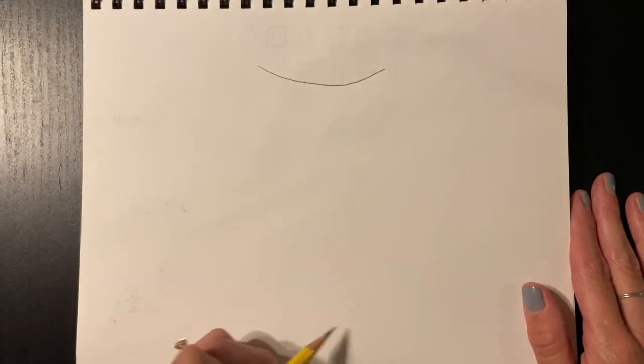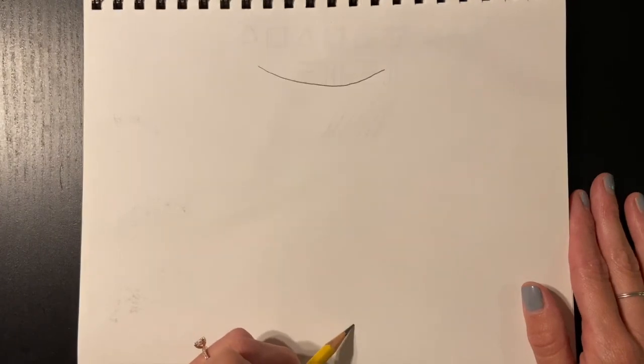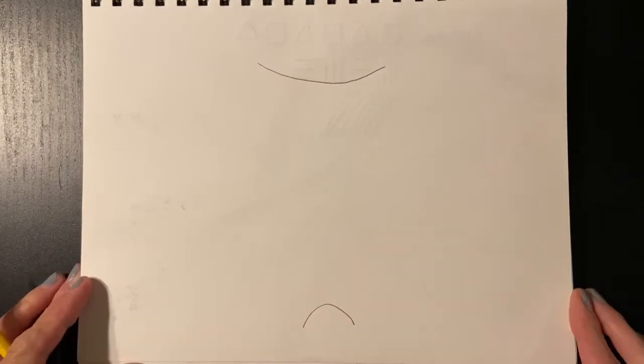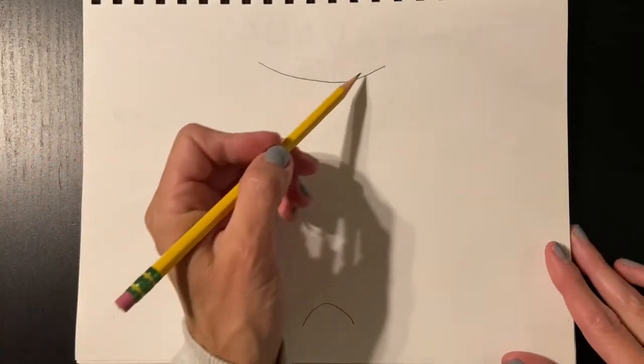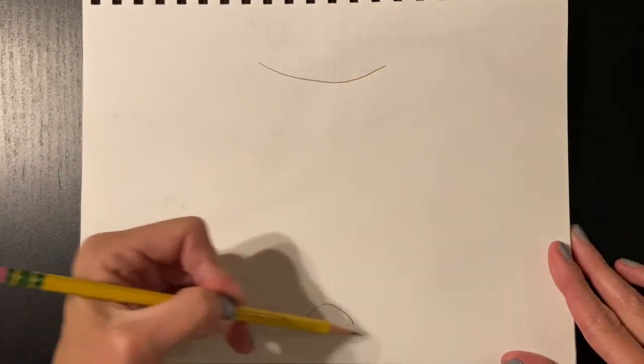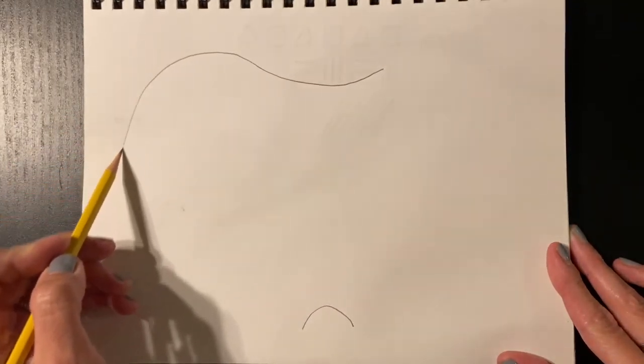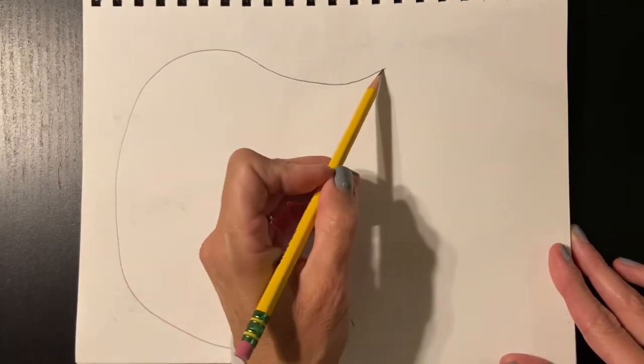I'm going to do an upside down curve, like a frown, a little bit smaller on the bottom below it. Here's my big smile on top and here's my small frown on the bottom. Then I'm going to curve around and around to connect them, like the letter C, really big. I'm going to do it on this side as well.